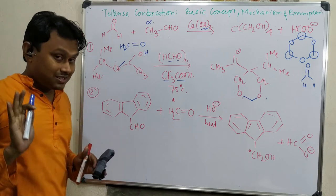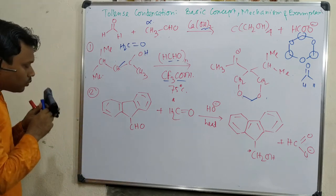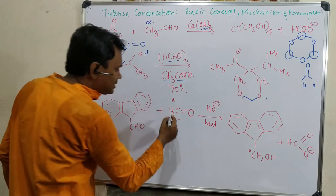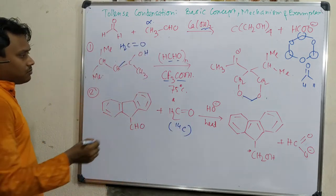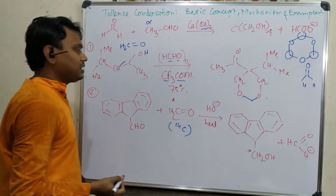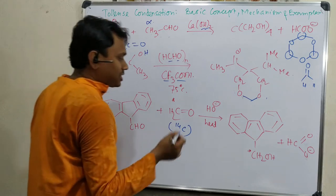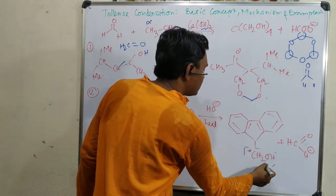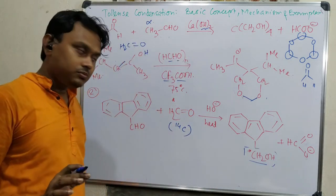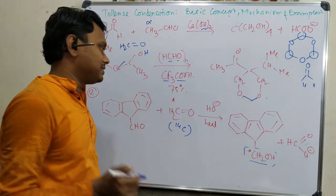Now the second example which is little tricky, please focus. So here you can see benzaldehyde with C-14 carbon, radioactive carbon. So formaldehyde we have taken and we are doing this reaction. But surprising point is that this label is here. Question, how?